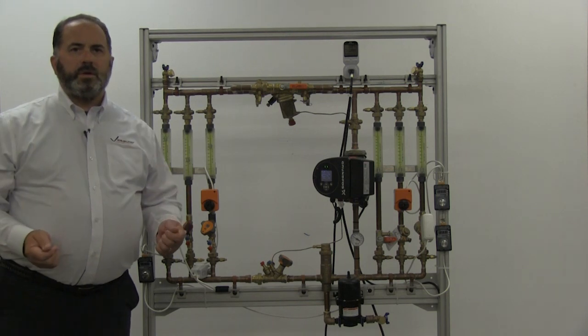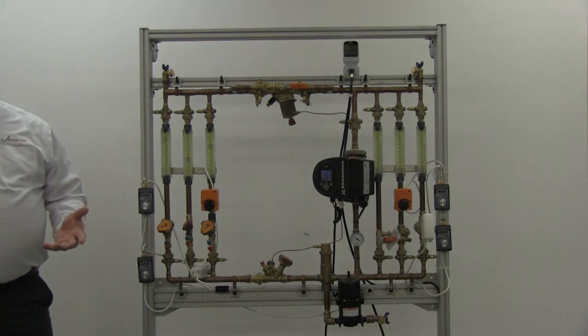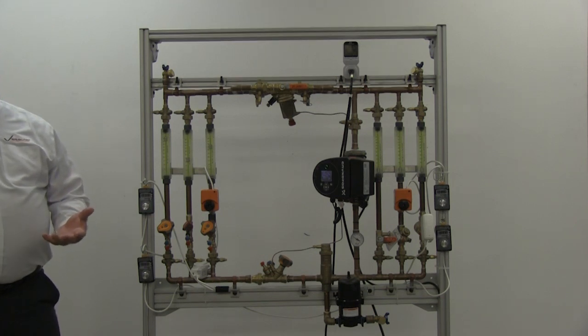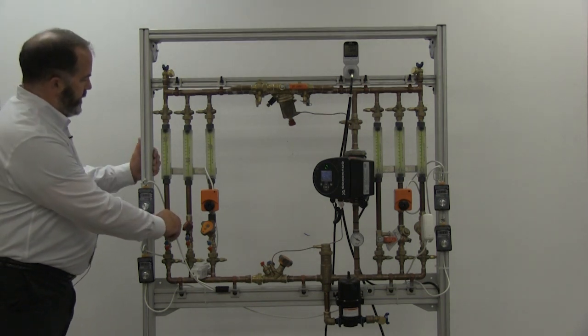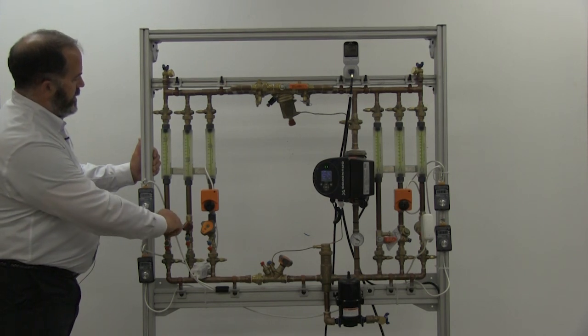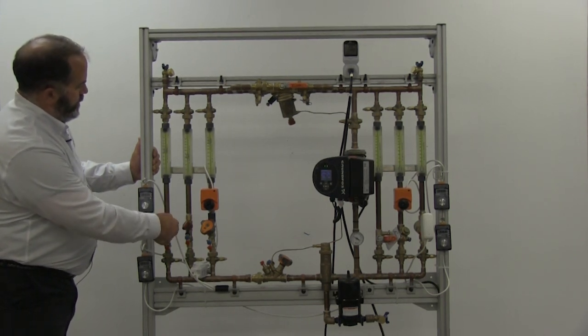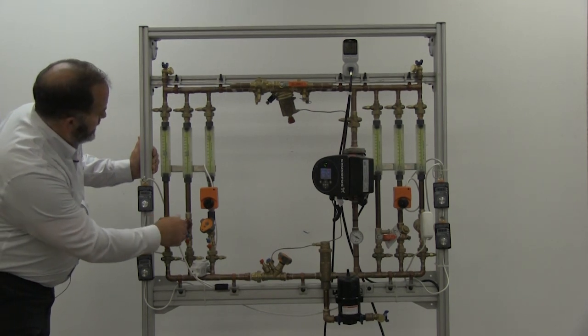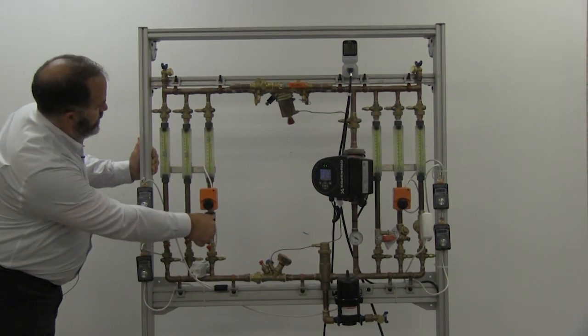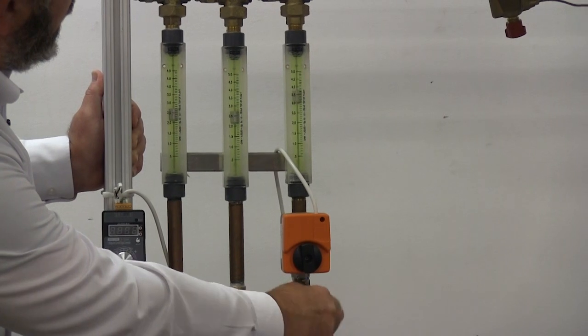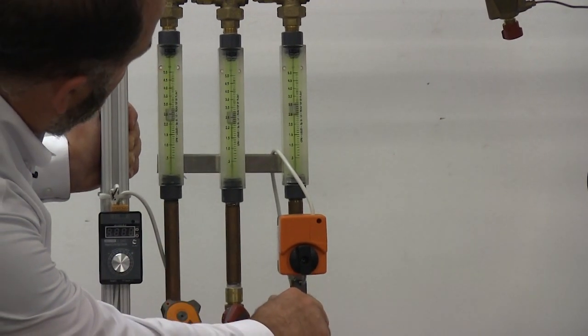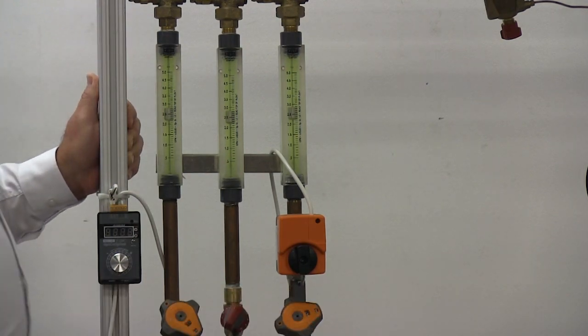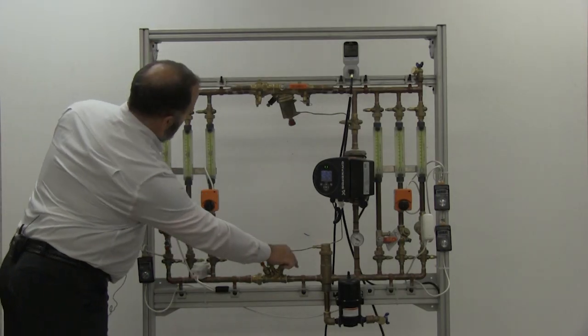Now, the first thing we're going to do is we're going to basically statically balance the system. So we're going to introduce the balancing valves, and we're going to balance the system to our design flow. So what I'm going to do is proportionally balance it. So I'm going to set everything so they're at equal levels of overflow, and then I'm going to use a partner valve to set my final flow.